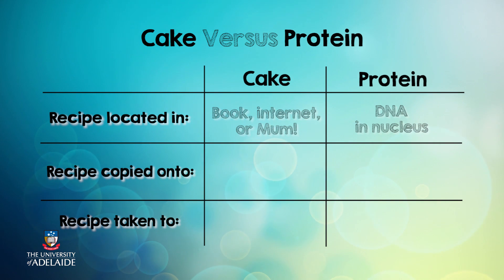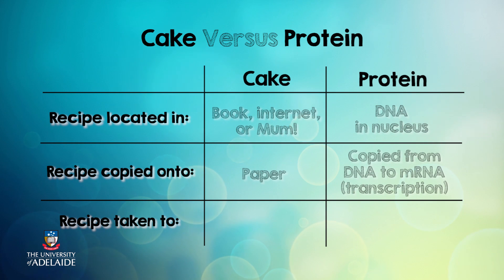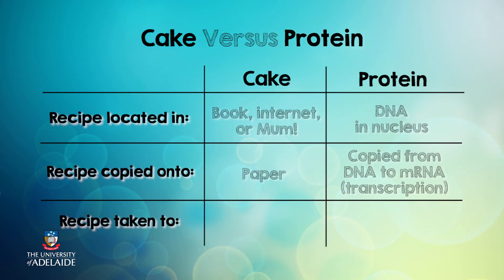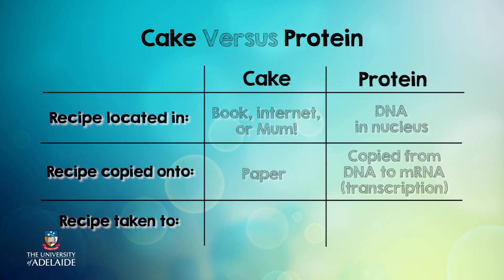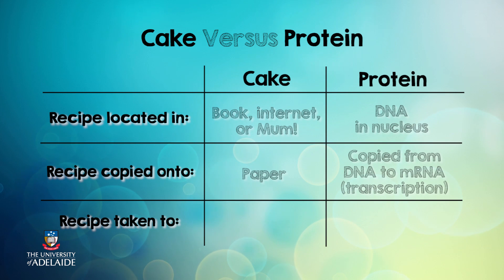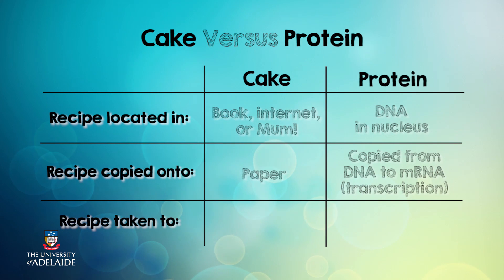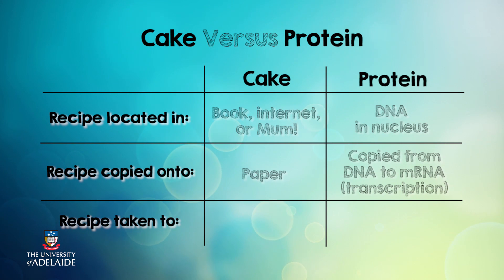When I want to make a cake, I usually write the recipe on a sheet of paper so that I have my own copy. Similarly, during protein production, the instructions for making a protein are copied or transcribed from DNA onto a molecule called messenger RNA, or mRNA. This process is called transcription. Before transcription can take place, the double-stranded DNA molecule must first separate into two single strands of DNA. Enzymes in the nucleus then read one of these single strands and assemble a matching strand of messenger RNA.